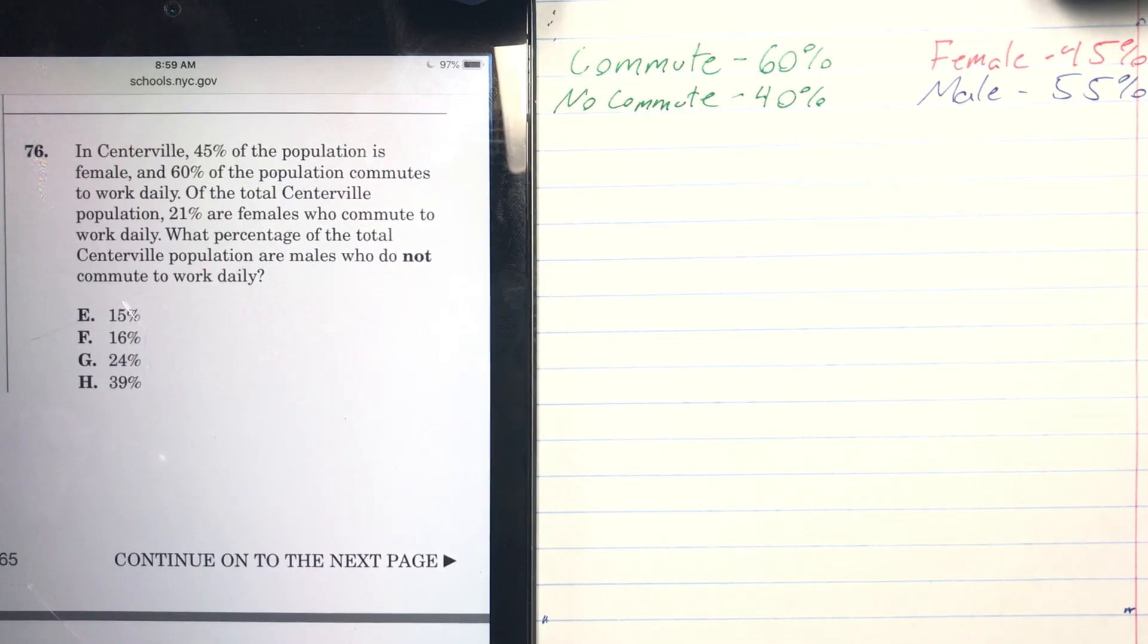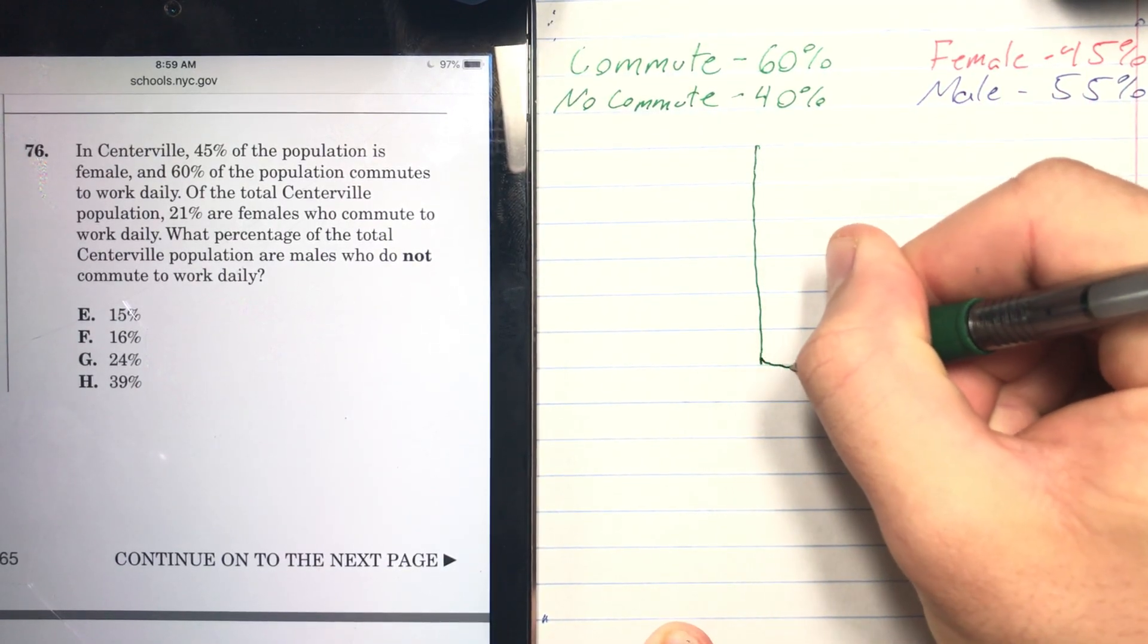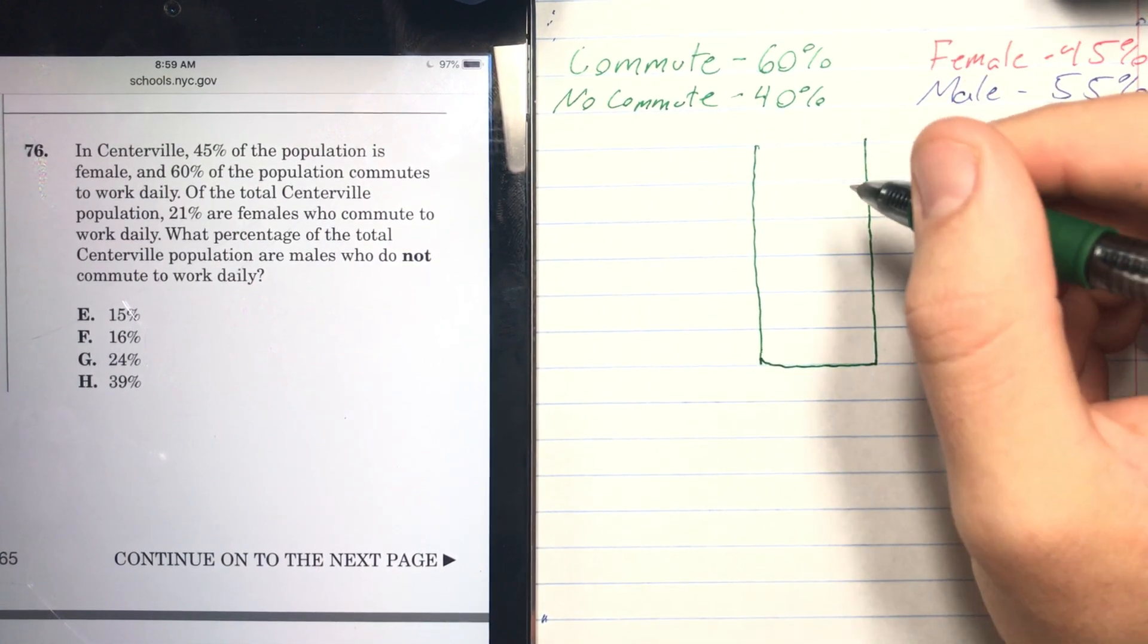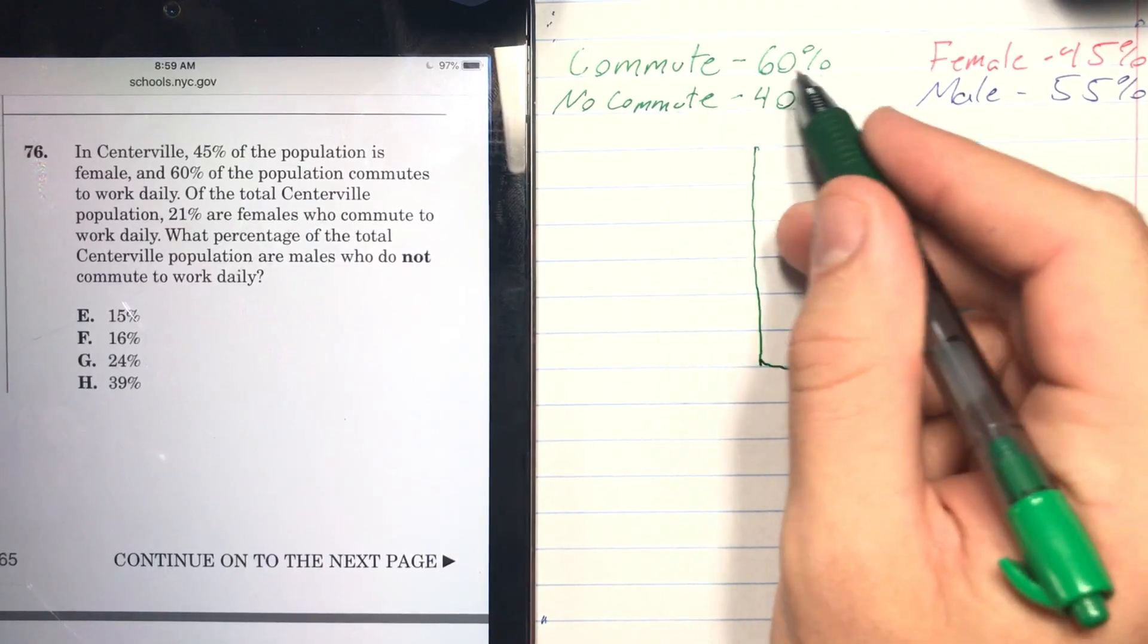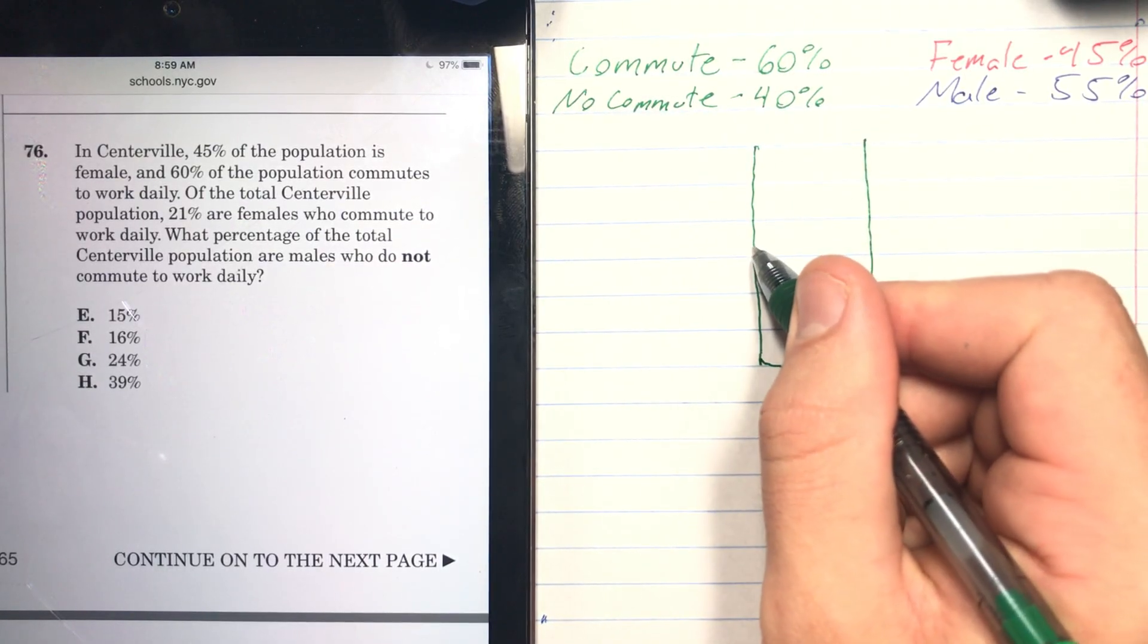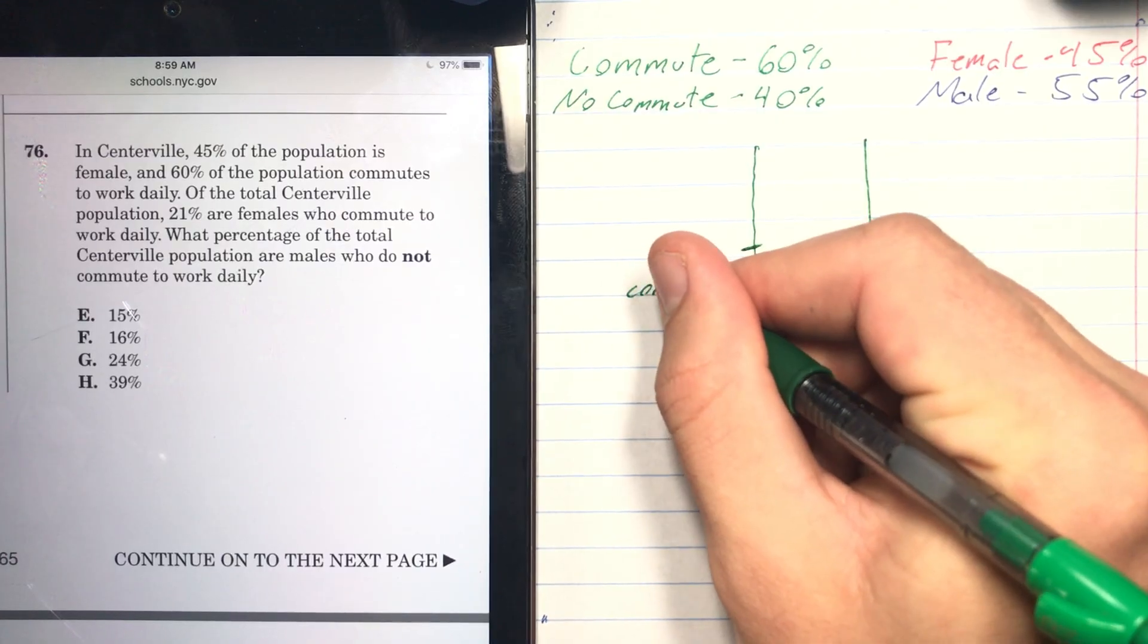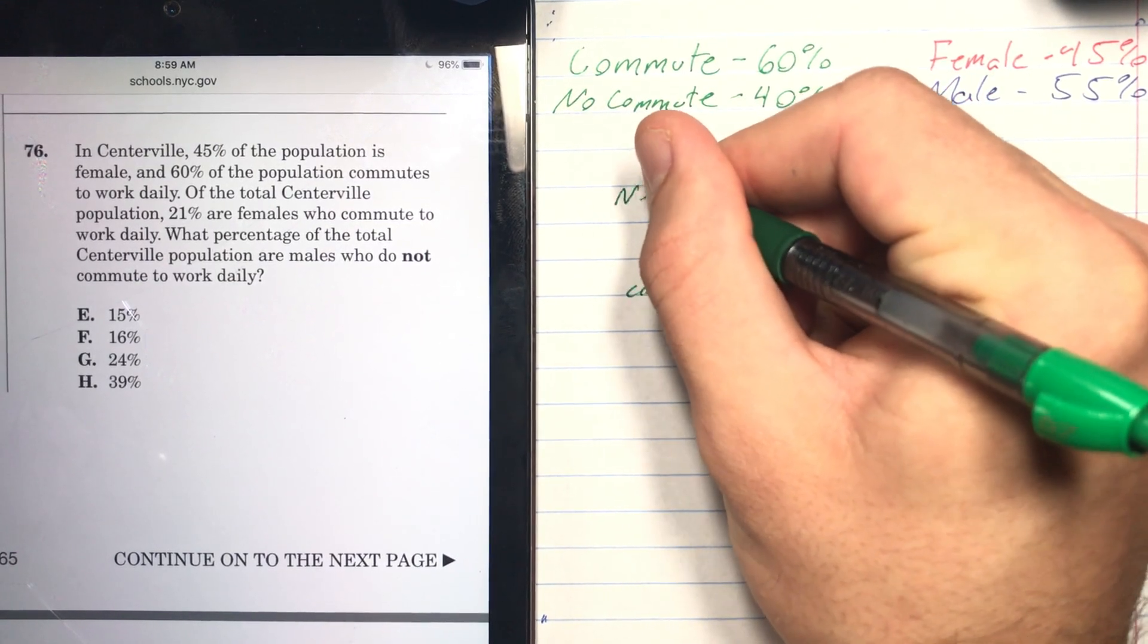Let's visualize this Centerville population here. Let's just assume there's a big bucket with the entire Centerville population in it. So 60% of the people commute, so let's say it's right about here. This will be the commute and this will be no commute.